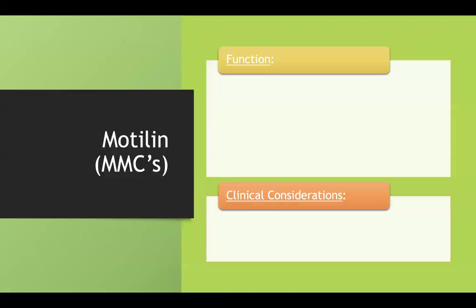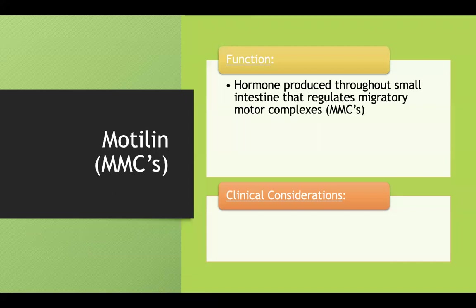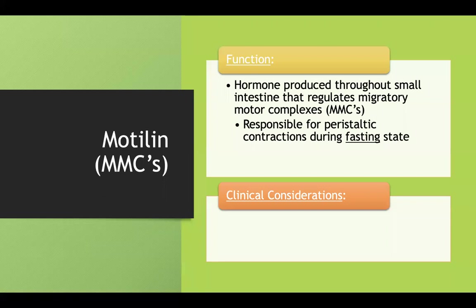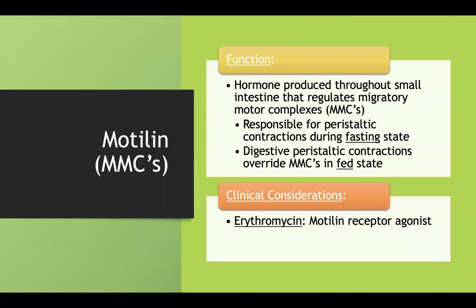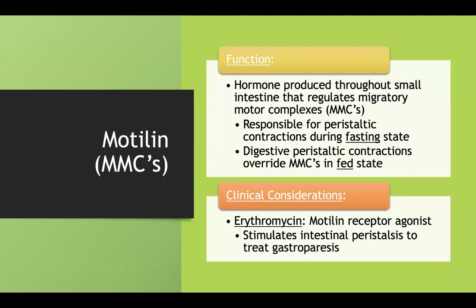Motilin is a hormone that regulates migratory motor complexes (MMCs), which provide peristalsis during the fasting state — that's what causes your stomach to grumble when you're hungry. When you eat, a different system facilitates peristalsis, but MMCs keep things moving even between meals. The drug erythromycin, a macrolide, is a motilin receptor agonist that triggers intestinal peristalsis and is used to treat conditions like gastroparesis.